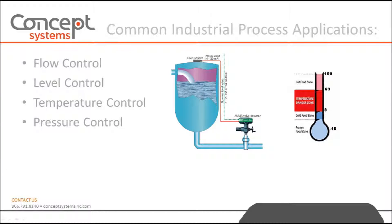Control loops are also found in industrial processes and on the plant floor. Common examples are flow control, level control applications, temperature control, and pressure control.